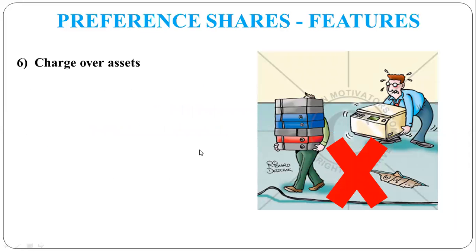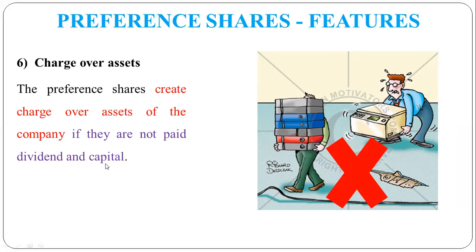Another feature is charge over assets. Equity shareholders cannot make a claim on company assets for unpaid dividend or capital, but preference shareholders can. If the company has not given dividend or capital to preference shareholders, they can take the company's assets to recover what is owed. So preference shareholders have a charge over the assets of the company if the company does not pay them dividend or capital on time.